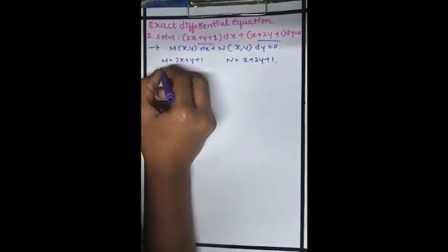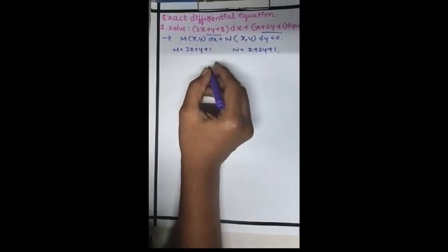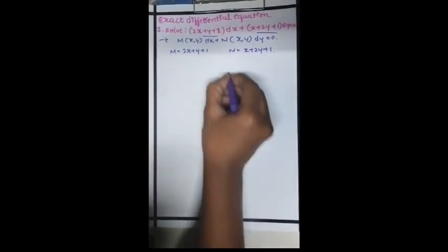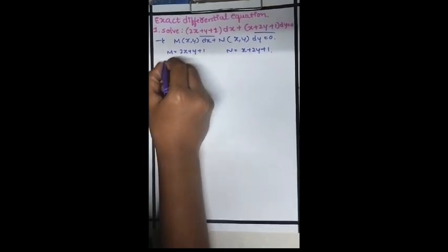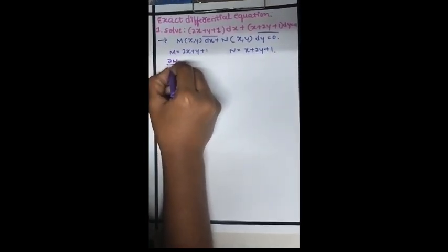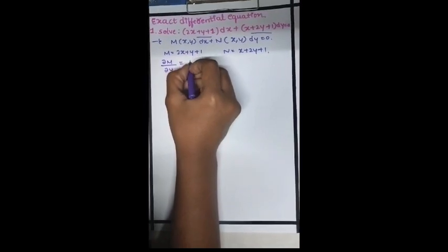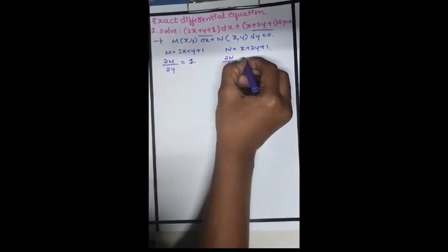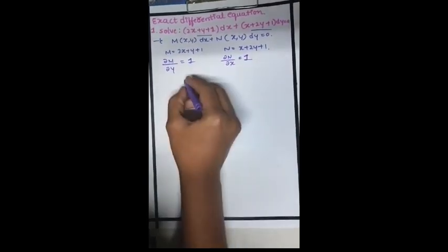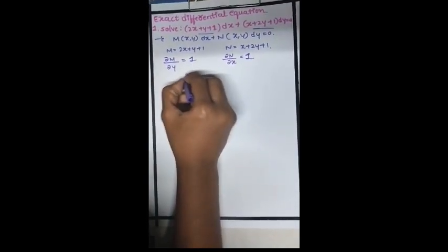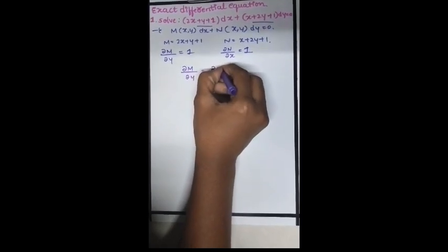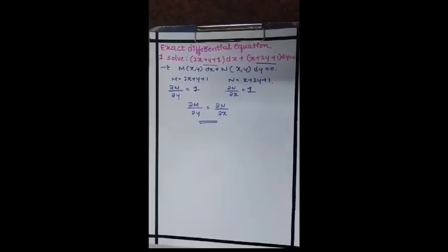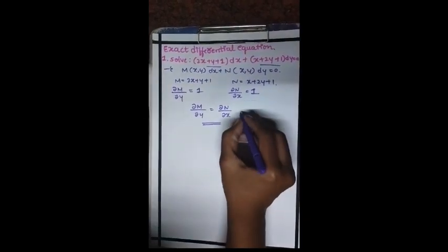We have to partially differentiate M with respect to y and N with respect to x. ∂M/∂y is equal to 1 and ∂N/∂x is equal to 1. Hence ∂M/∂y is equal to ∂N/∂x, so the equation is exact.